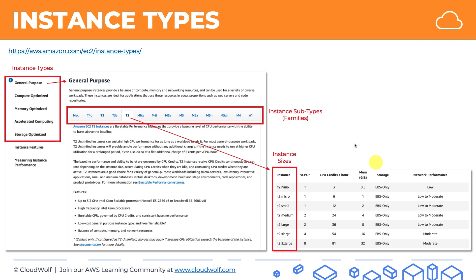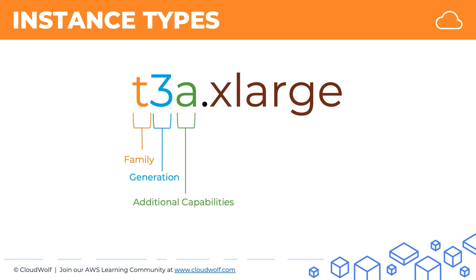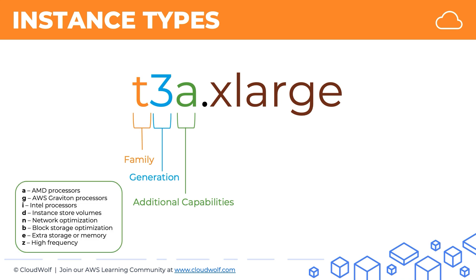Now we'll have a quick look at one final thing: how to read instance type names. It's quite straightforward once you get through it. The first letter is always the family of the instance. The second letter is the generation — always choose the latest generation, as it just means it's newer. The third letter is optional, but if it's there it means additional capabilities. For example, 'a' means it has an AMD processor. Once you know these, you can look at an instance type name and immediately know something extra about it.